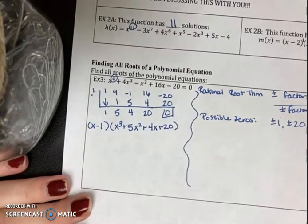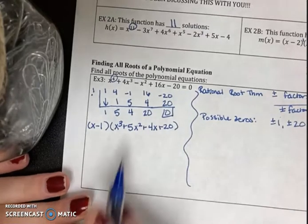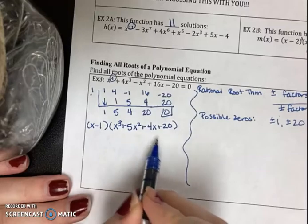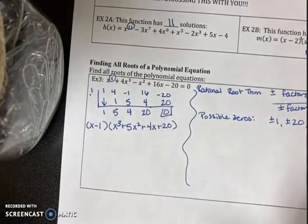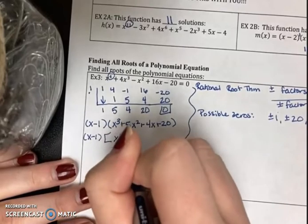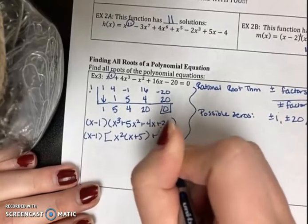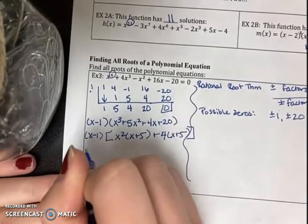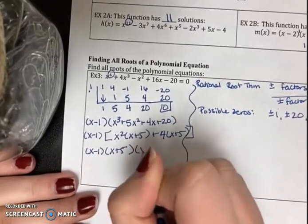Factoring by grouping works here. From x³+5x²+4x+20, I pull x² out of the first two terms: x²(x+5), and 4 out of the last two: 4(x+5). Both groups share (x+5), so the full factored form is (x−1)(x+5)(x²+4).